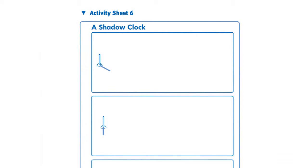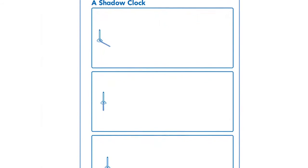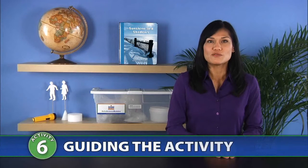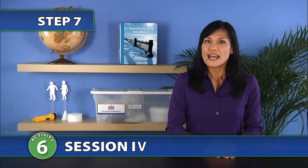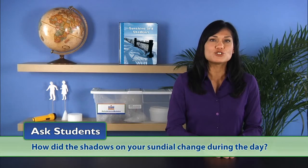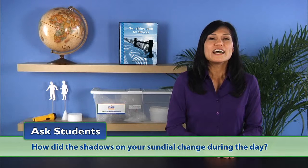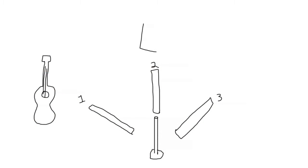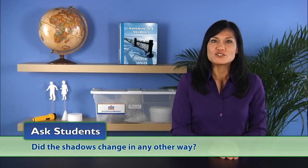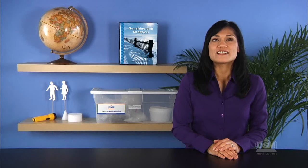To prepare for Session 4, students will use Activity Sheet 6 to apply knowledge of how the length and position of shadows indicate time of day. To begin Session 4 while in the classroom, ask students: How did the shadows on your sundial change during the day? Help students understand that the shadows changed position on the paper as the sun changed its position in the sky and were always opposite the sun. Then ask: Did the shadows change in any other way? Students may say they changed in shape or length.